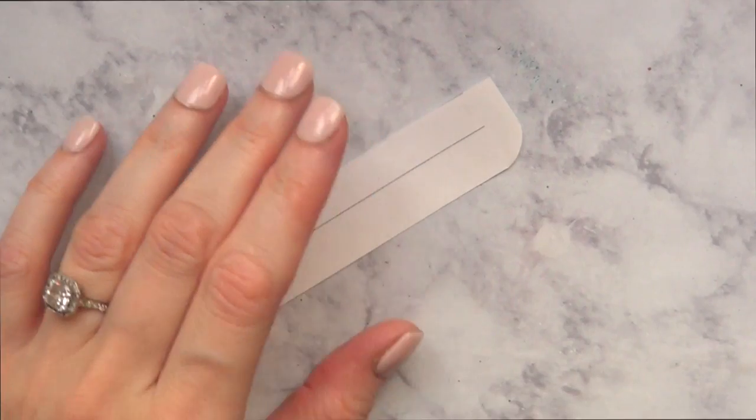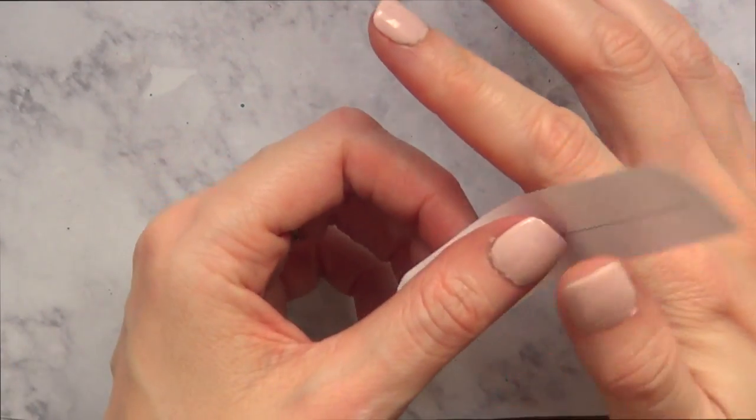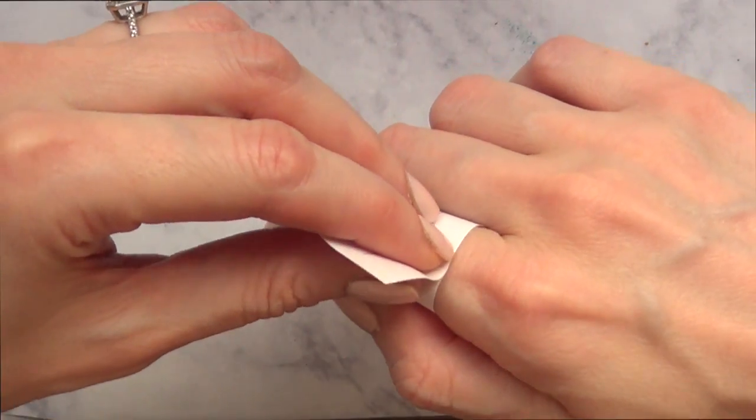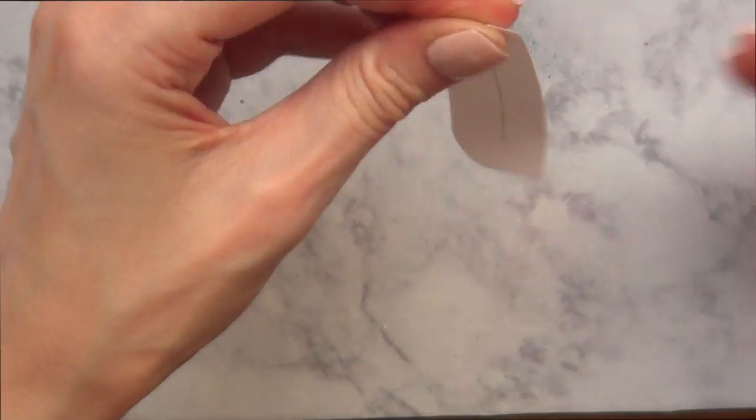I'm just going to measure it to my fingers. A lot of my fingers are pretty much the same size, so I'm going to measure it to the size of my fingers, cut the excess, and this is going to be the size of the ring that I need.